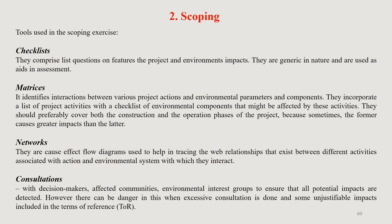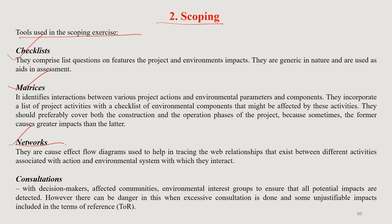Tools used under scoping study include checklists — a list of queries and questions covering different project impacts, either generic or specific in nature. Matrices help in identifying interactions between various project and environment parameters or components — for example, a water storage development structure may impact local society, local environment, and agriculture. Networks look at the effect-flow mechanism, tracing the relationship between different activities associated with the action and the environmental system with which those parameters interact.